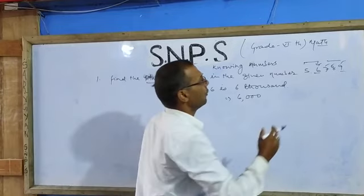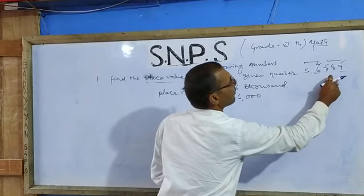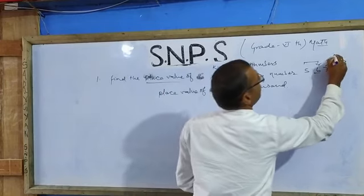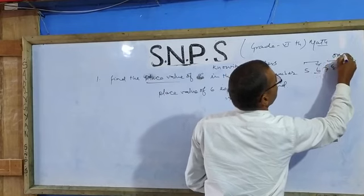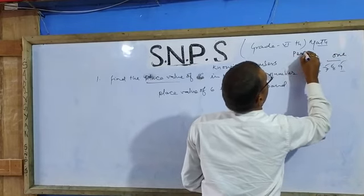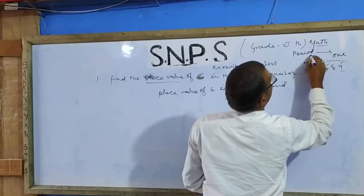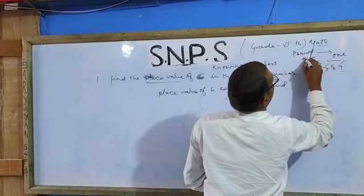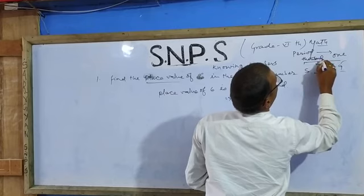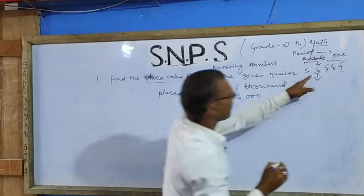The period will also be 1000. Why? In the ones period there are 3 places: once, 10, 100. This is the ones period. The thousands period. In the thousands period, there is the 6.